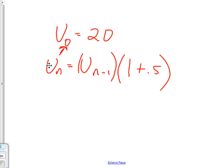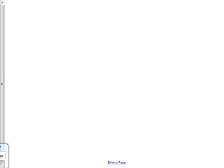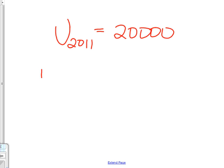All right. I hope you wrote this. U sub 2011 is equal to 20,000. U sub n. U sub n minus 1. Please stop talking. Thank you. Times 1 minus 0.05. Raise your hand if you had that one right. Okay, good.